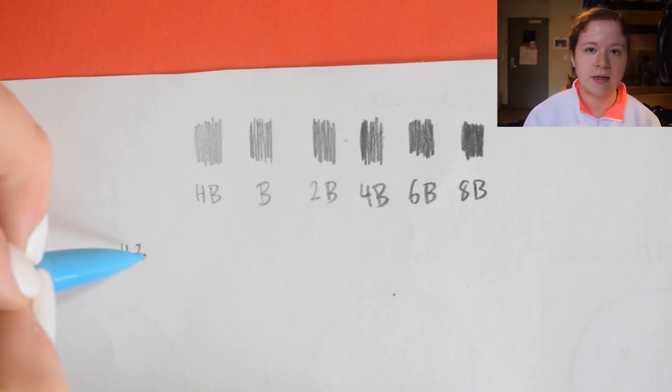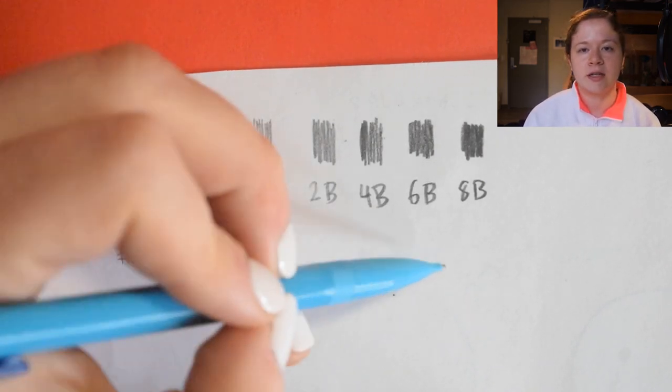HB, B, 2B, 4B, 6B, and 8B. As you get higher in the numbers, they get darker in color.